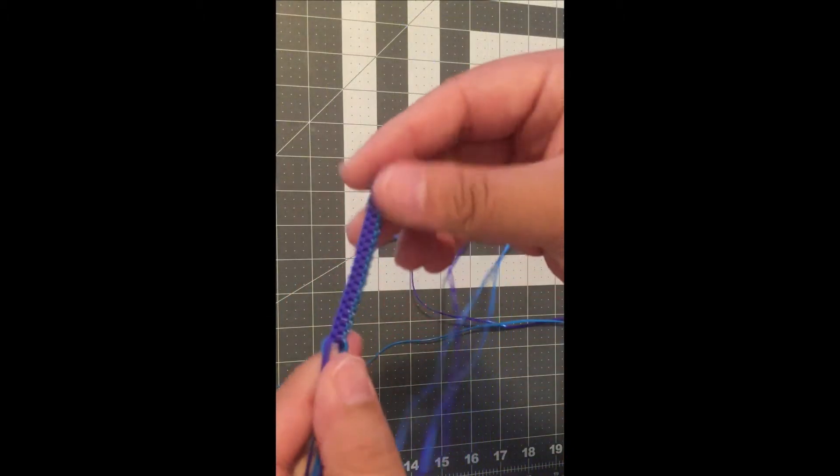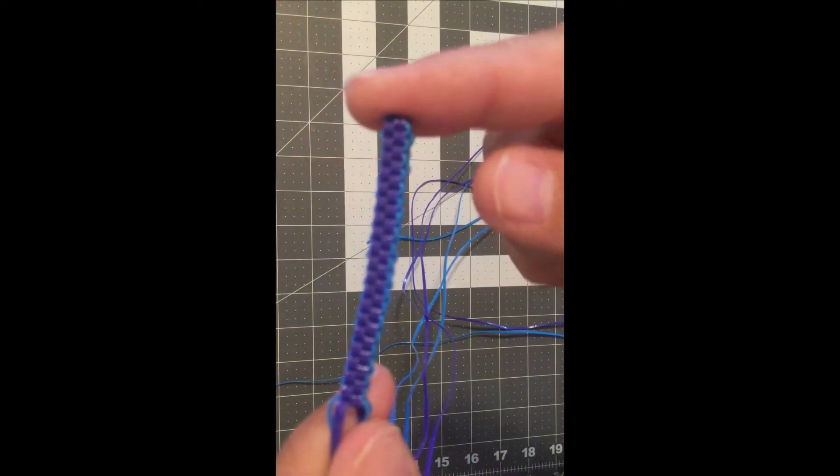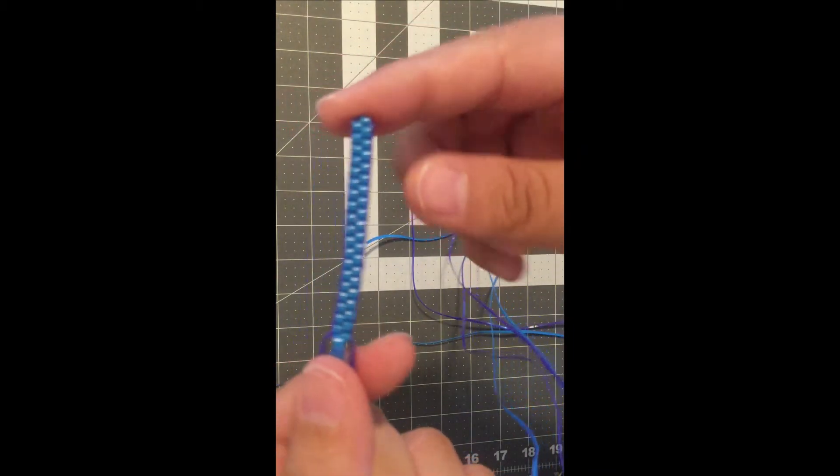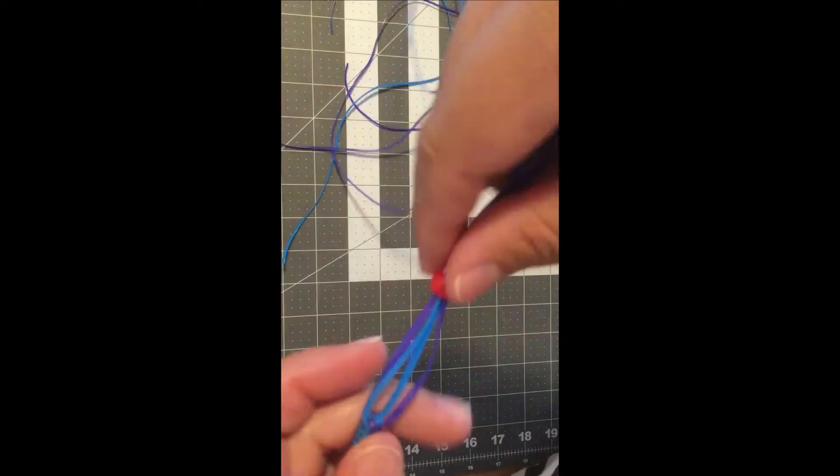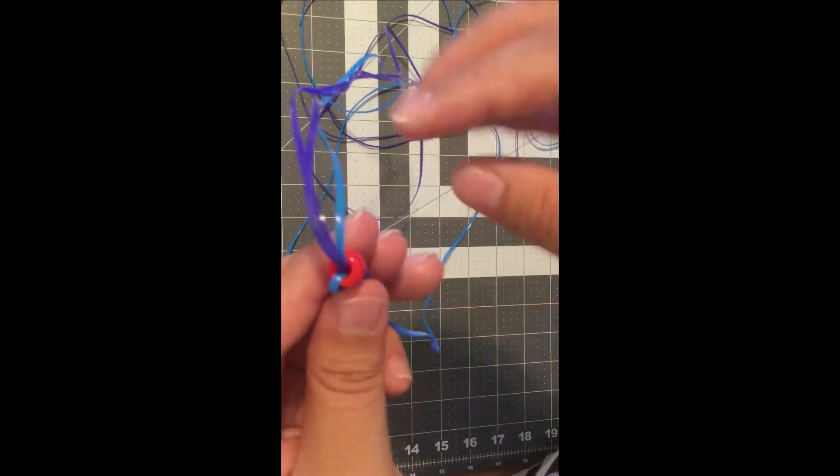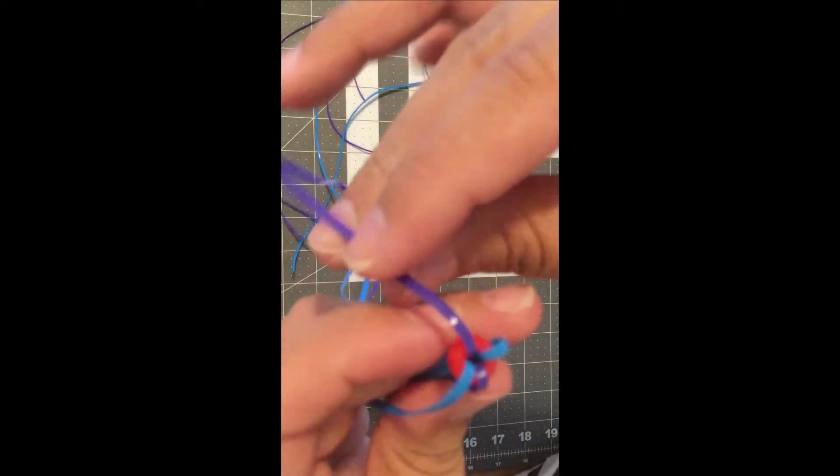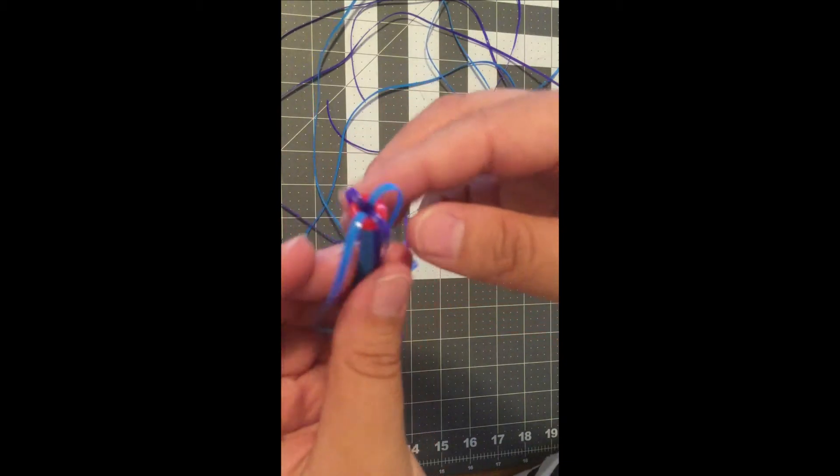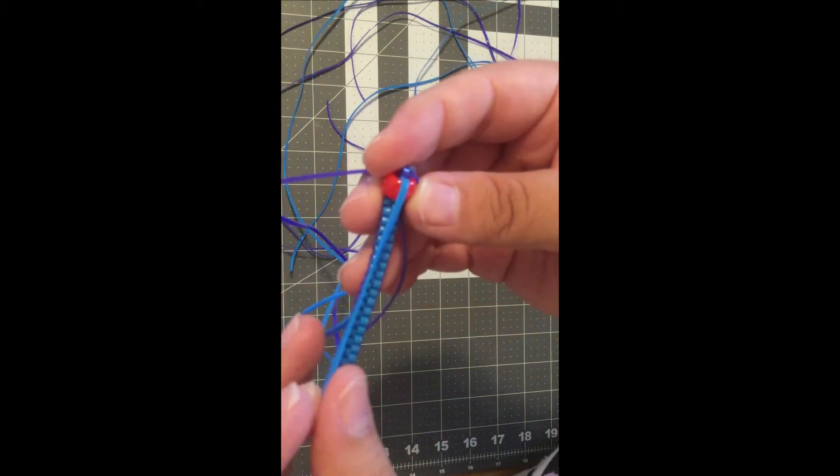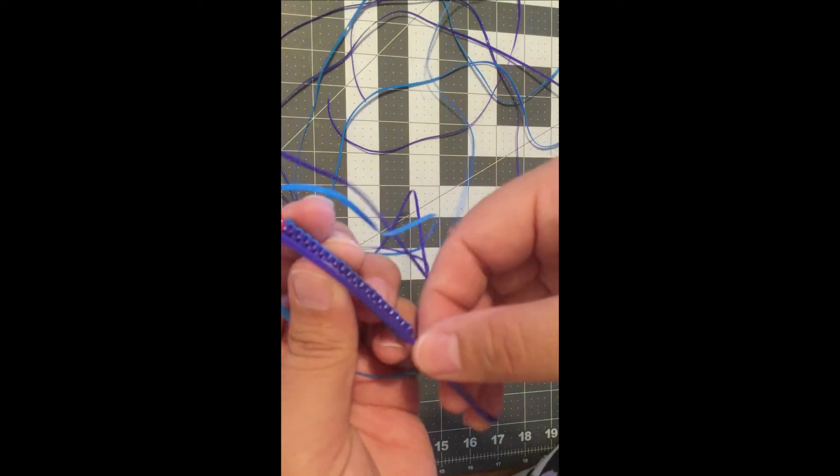This is what my lanyard looks like by the time that I wanted to add a bead. Feed your cords through a pony bead and now you will be able to continue your lanyard by making a box over the pony bead. Keep the colors of your cords in line as you open them up.